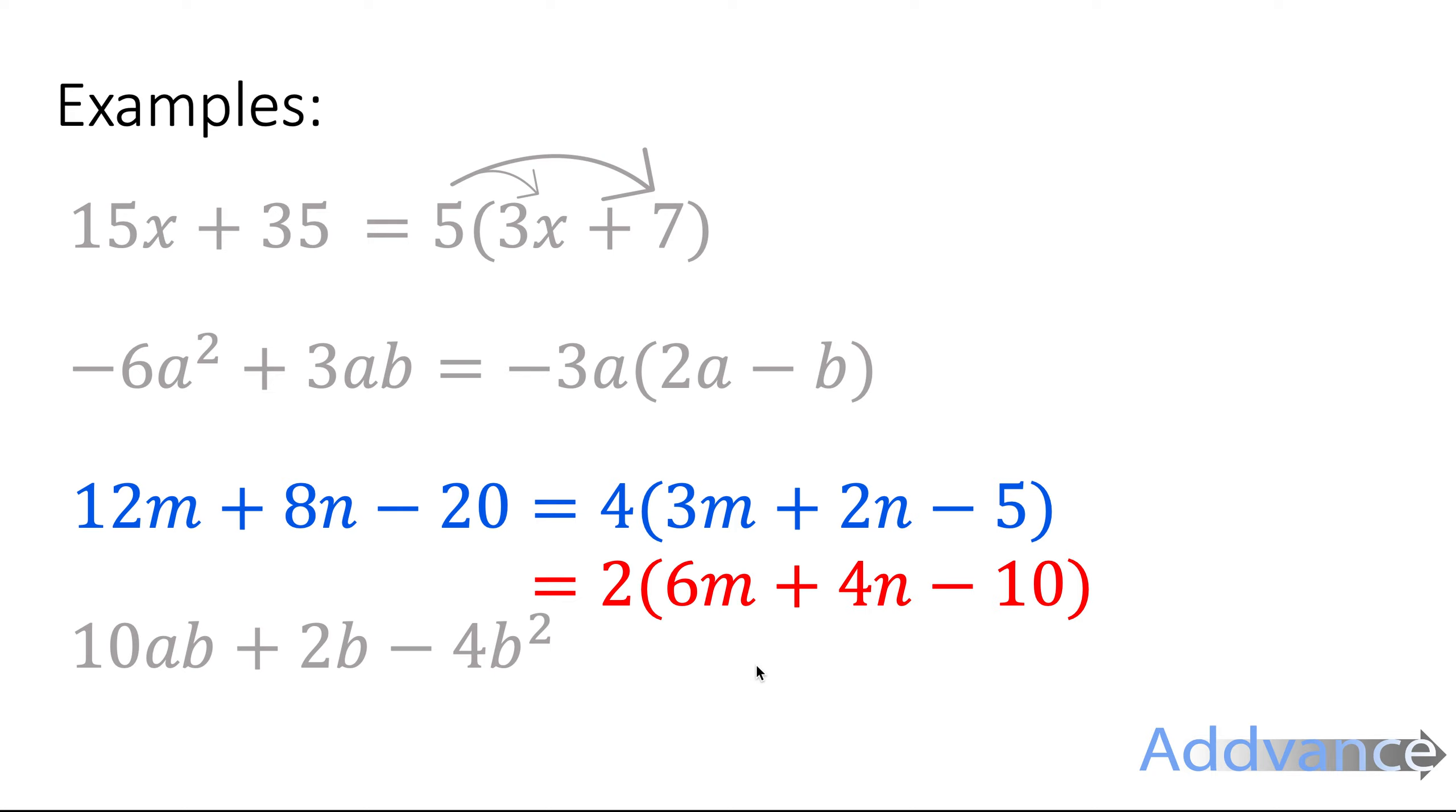The one in red is if you take out a 2. And although that is mathematically correct, it is still a correct factorisation, it is not the one that will get you marks in an exam because you have to take out the biggest thing, and the biggest thing is 4, not 2.